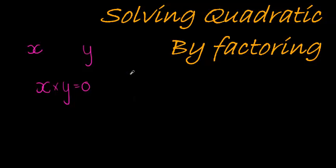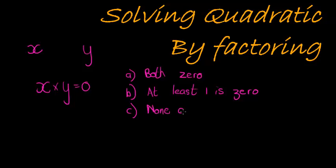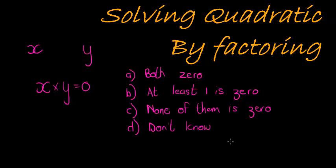I'll give you multiple choice. Is it choice A, that both values are zero? Is it number B, at least one is zero — so either x is zero or y is zero? Or is it C, none of them is zero? Hopefully you went with B: at least one of them is zero.